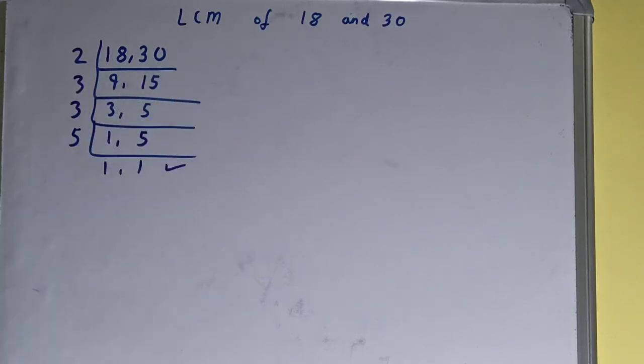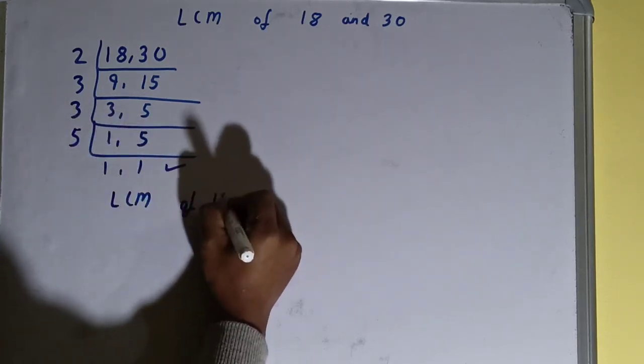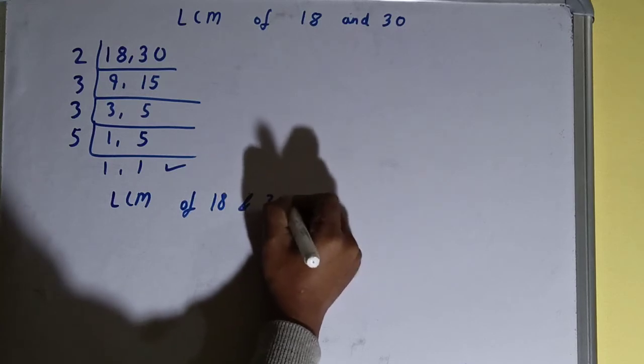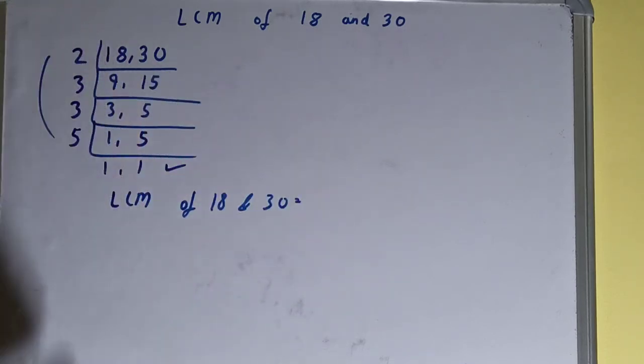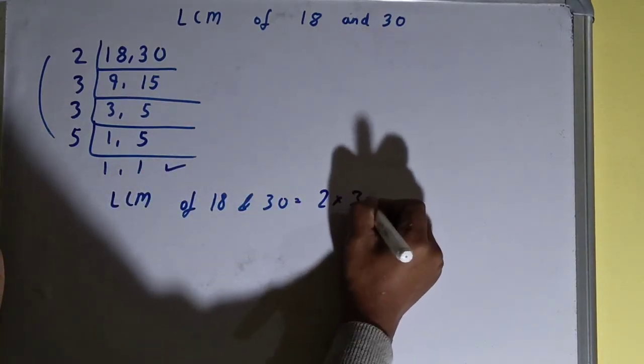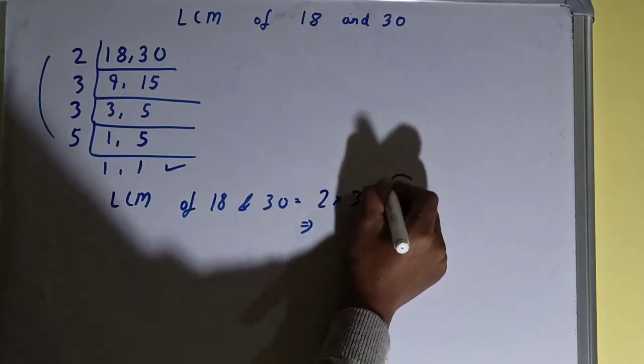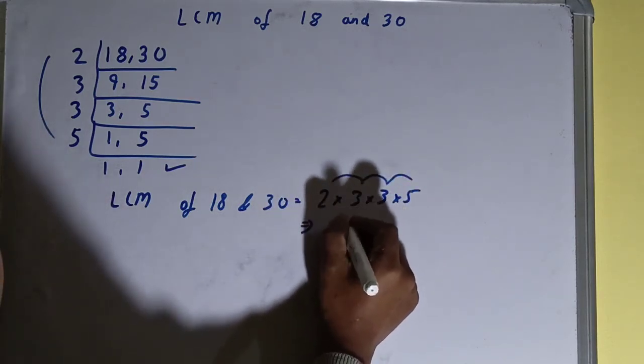Once we have that, we need to stop, and we need to do one last thing: that is, LCM of 18 and 30 is equal to multiply whatever you have got on the left-hand side, that is 2 times 3 times 3 times 5. So the answer will be 2 times 3 is 6, 6 times 3 is 18, 18 times 5 is 90.